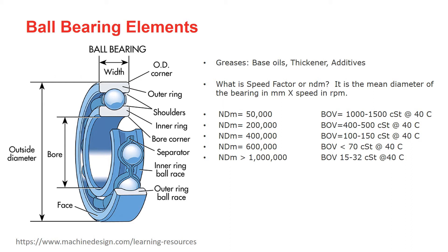Grease has three components: base oils, thickeners, and additives like extreme pressure (EP) additives. Base oils are typically mineral or synthetic. Thickeners can be different types of metal soaps or non-soaps such as polyurea or clay. For roller bearing applications, the majority of the time lithium or lithium complex thickeners are recommended. Additives are selected based on the application and operation of the grease.